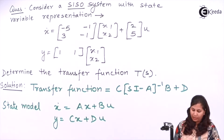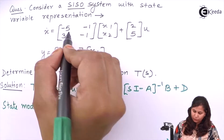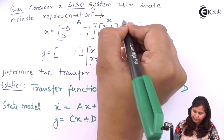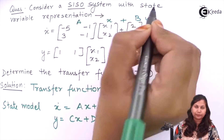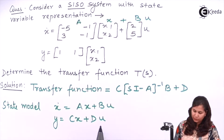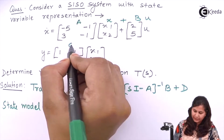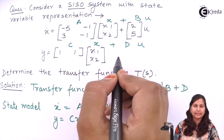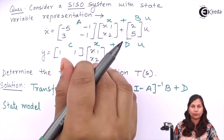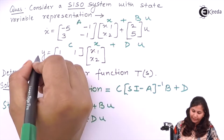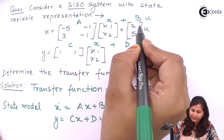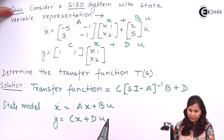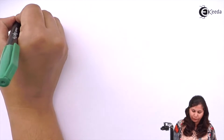Now comparing these two, we have x-dot equals Ax plus Bu, and y equals Cx plus Du. Du is not present here, so D is zero. A is this matrix, B is this, C is this, and D is zero. So let's write the value of all four matrices.